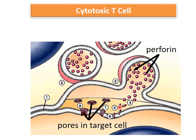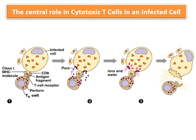The cylindrical perforin molecules form barrel-like pores in the target cell membrane. These barrel-shaped pores cause salt and water entry from the extracellular fluid into the target cell, causing lysis or rupture of the target cell, which eventually bursts and is destroyed.